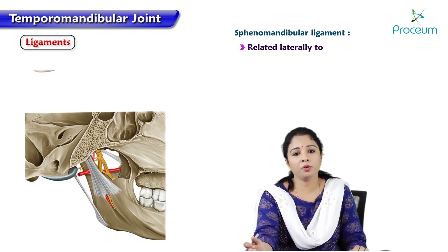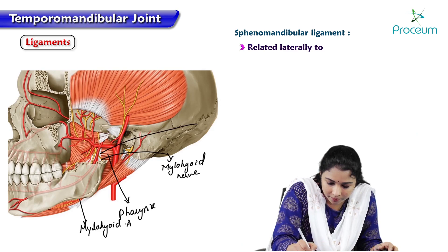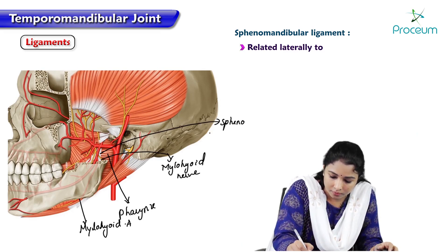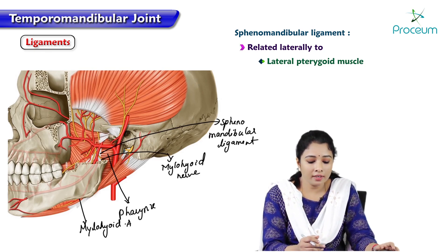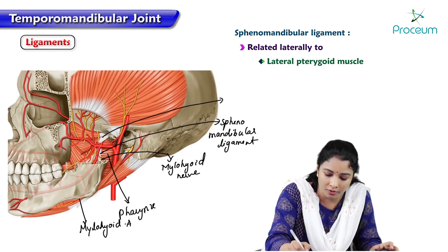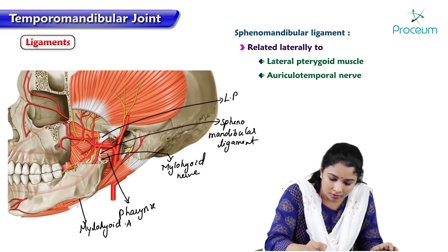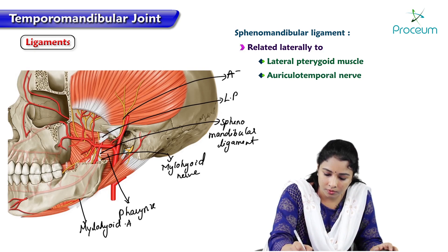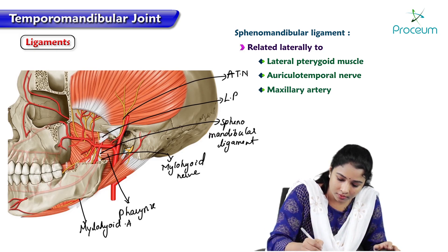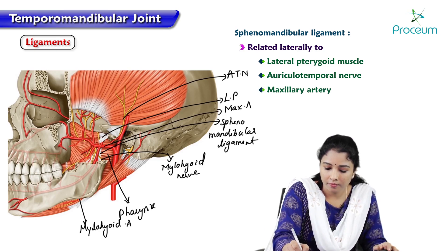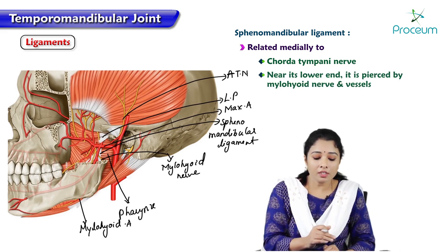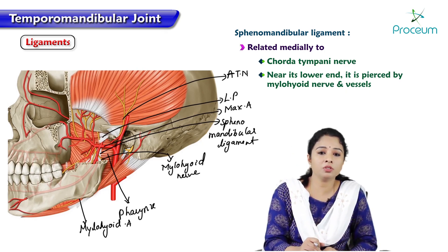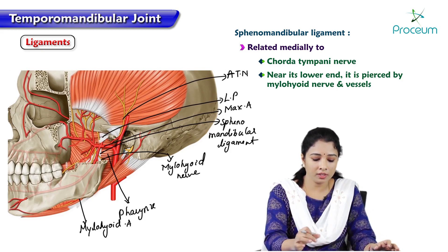Regarding the relations of the spinomandibular ligament: laterally it is related to the lateral pterygoid muscle and the auriculotemporal nerve. It is also related to the maxillary artery. Medially it is related to the chorda tympani nerve. Near its lower end, before attachment to the lingula, it is pierced by the mylohyoid nerve and vessels.